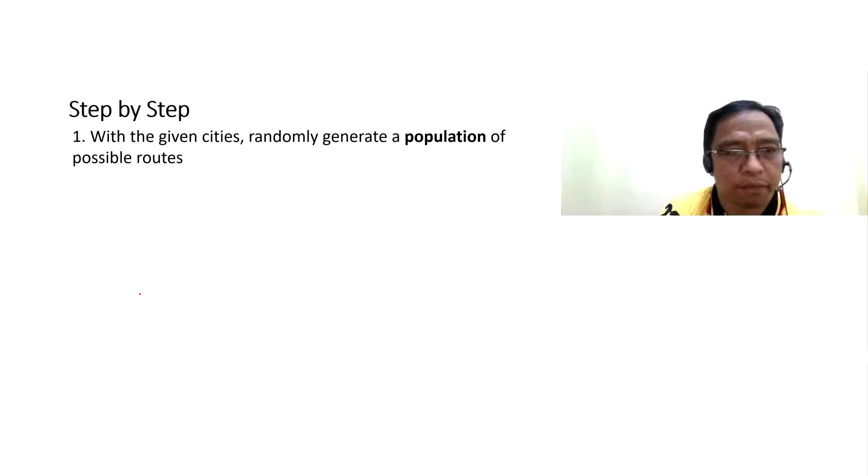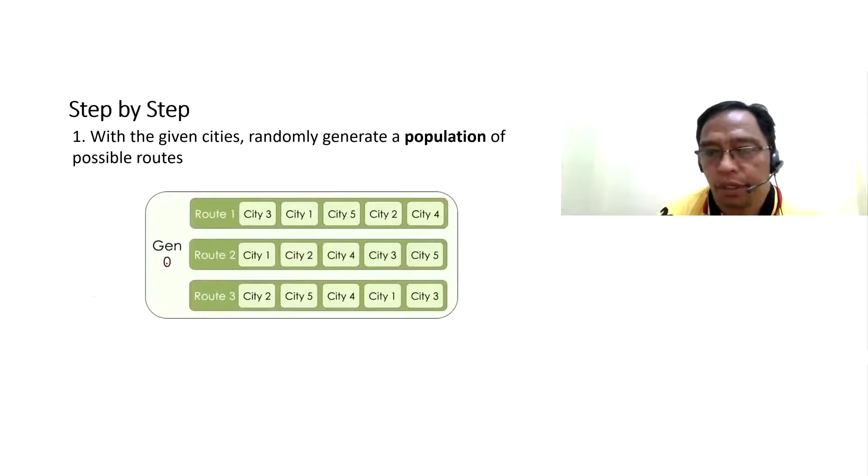Step by step number one, the given cities randomly generate a population of possible routes. We have to generate a seed of population called generation zero. As shown here, we have cities 1 to 5 with 3 routes and we want to find a shortest path between them. Randomly shuffle three times, totally random and place them in our starter generation.